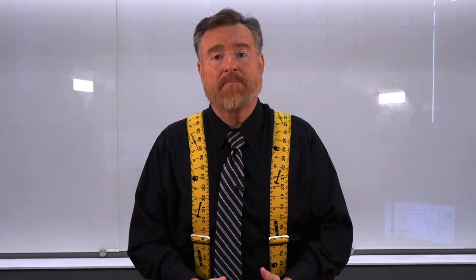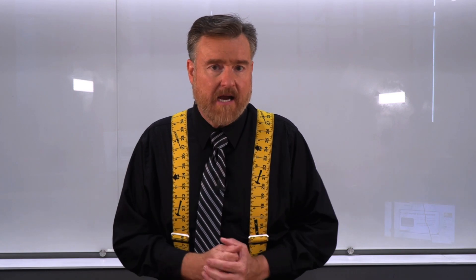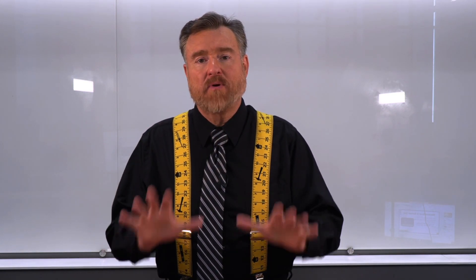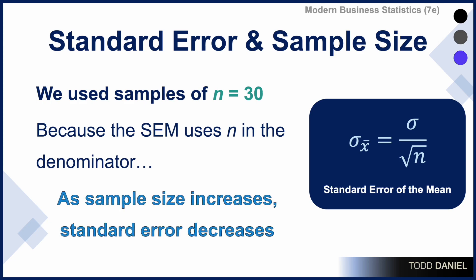This is called sampling error. Sampling error is the difference between the sample statistic and its corresponding population parameter due to randomness in sampling. It's measured by the standard error of the mean. When we did our experimentation with standard error of the mean, everyone selected a sample of the same size — we used samples of size 30. Because the standard error of the mean uses n, or sample size, in the denominator, as that denominator grows larger, the overall equation gets smaller. As sample size increases, the standard error decreases.